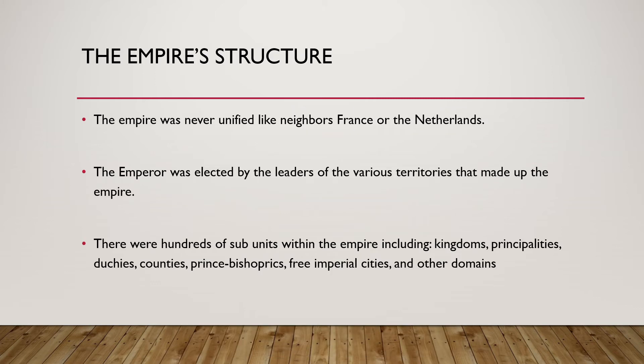The empire's structure was never really unified like France or the Netherlands, so they never really had that kind of national combined cultural hegemony. And the emperor, like I said, was elected by the leaders of the various territories. All these different kingdoms, principalities, duchies, counties, prince-bishoprics, imperial cities, and other domains under the Holy Roman Empire each got an elector, and that elector then chose amongst themselves who would be the emperor.